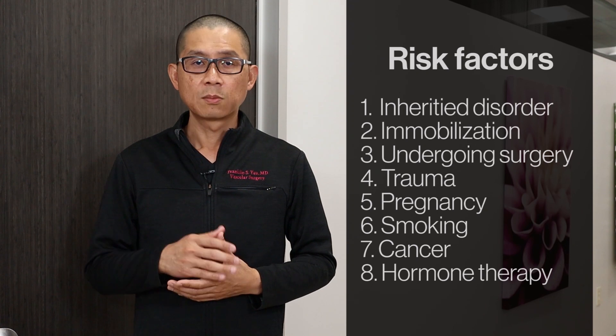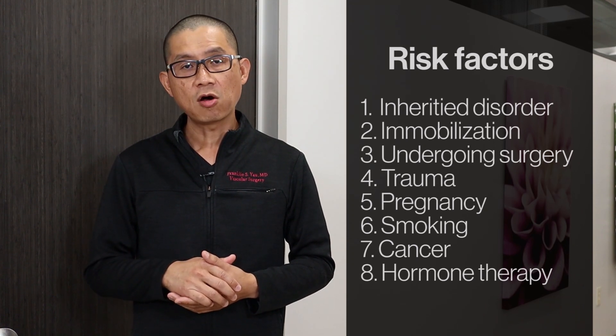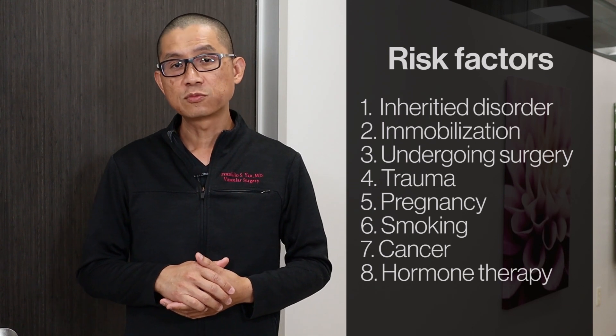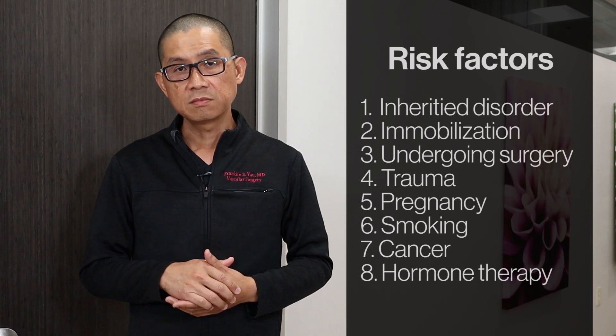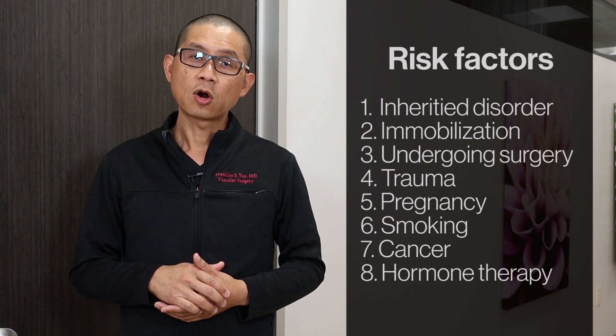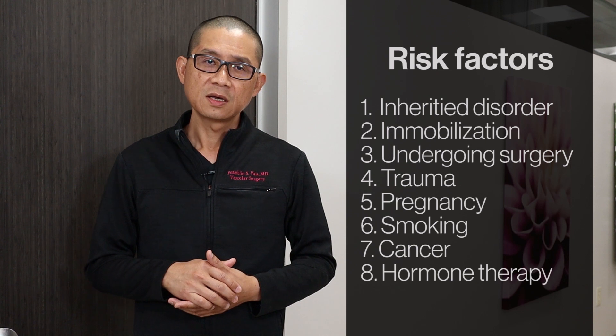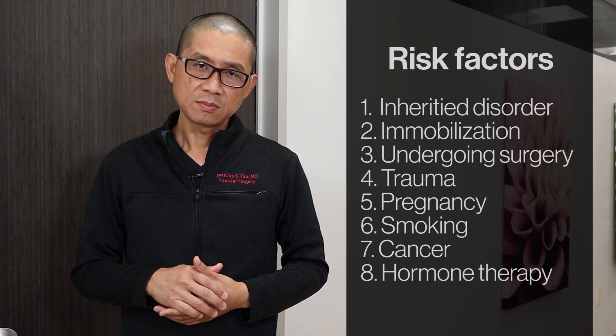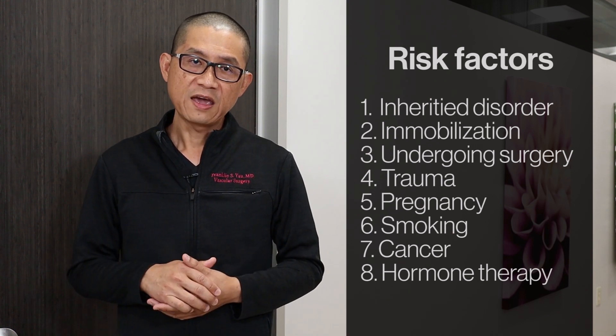The primary risk factors associated with deep venous thrombosis and pulmonary embolisms include the following: an inherited clotting disorder, prolonged bed rest during a long hospitalization, recovery from surgery, recovery from trauma, pregnancy, cancer, smoking, and taking oral contraceptives or hormone replacement therapy. These risk factors lead to an imbalance in the clotting mechanism of the blood so that blood clots form in the veins.